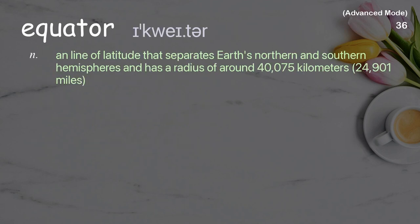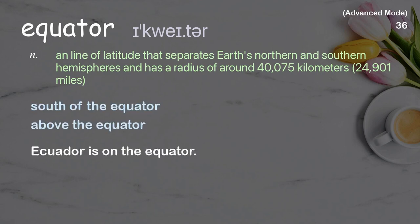Equator: a line of latitude that separates Earth's northern and southern hemispheres and has a radius of around 40,075 kilometers (24,901 miles). Examples: south of the equator, above the equator. Ecuador is on the equator.